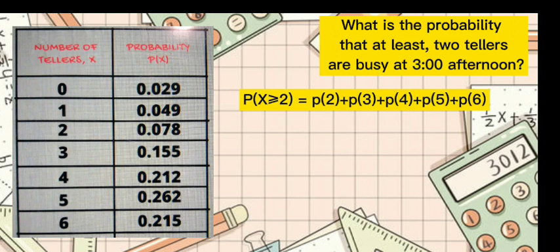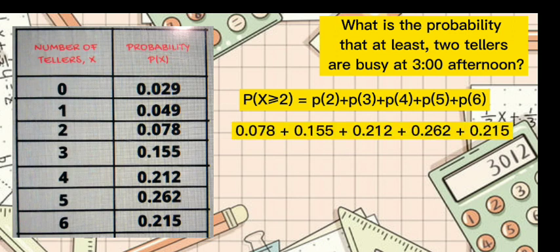So it would become P(X ≥ 2) equals P(2) plus P(3) plus P(4) plus P(5) plus P(6). Then substitute the corresponding probabilities: 0.078 plus 0.155 plus 0.212 plus 0.262 plus 0.215. Then add, and the answer is 0.922.